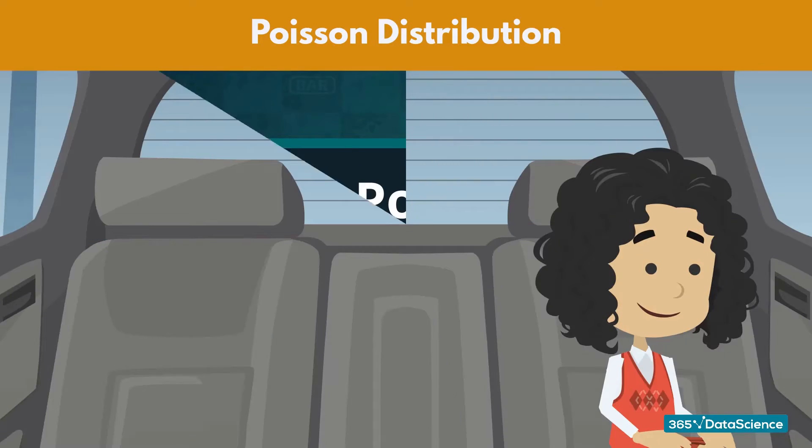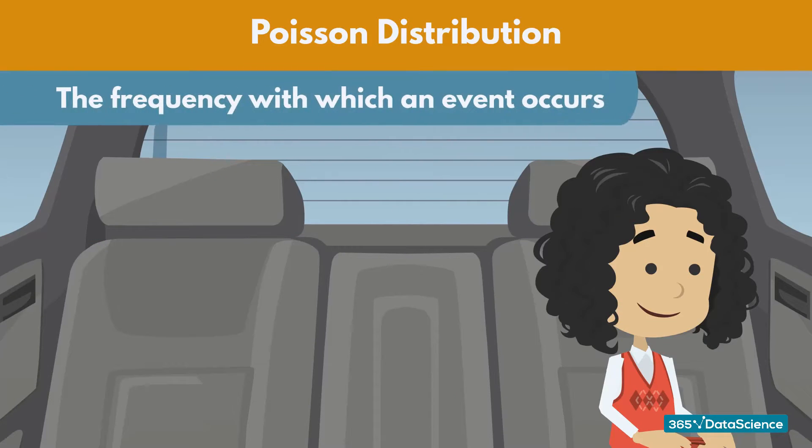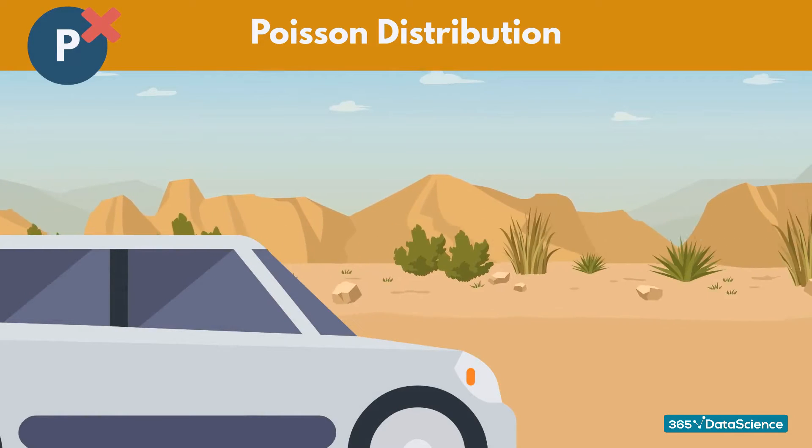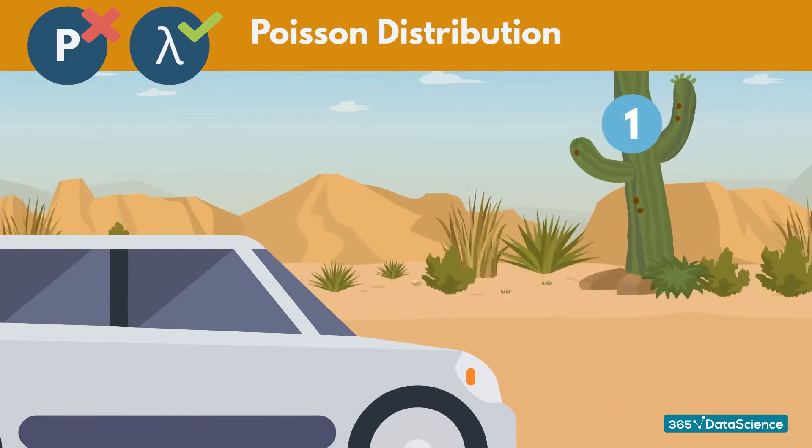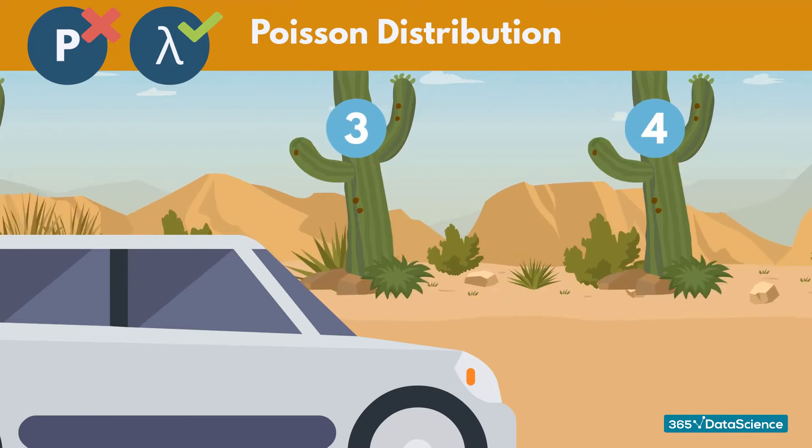The Poisson distribution deals with the frequency with which an event occurs within a specific interval. Instead of the probability of an event, the Poisson distribution requires knowing how often it occurs for a specific period of time or distance.